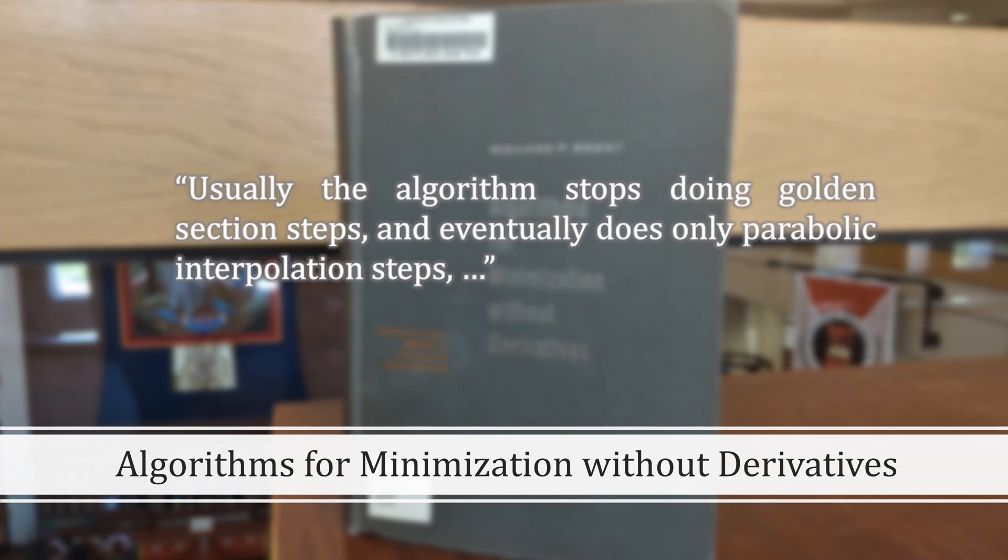Brent comments, usually the algorithm stops doing golden section steps, and eventually does only parabolic interpolation steps, as we saw in our previous example.